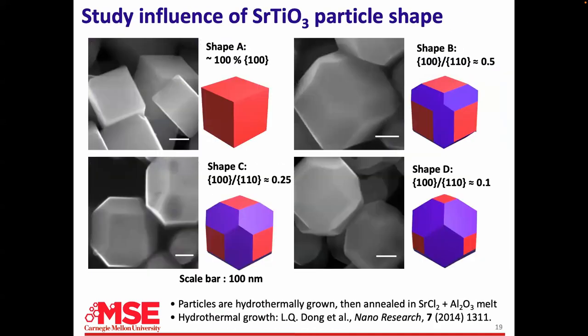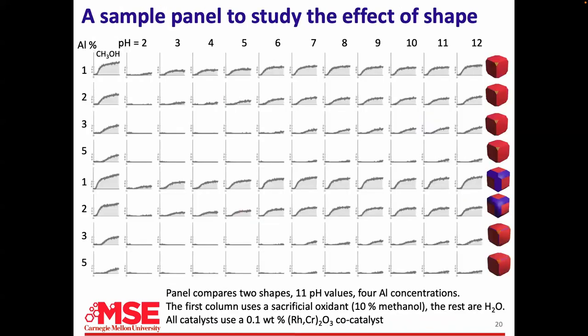What kind of experiments can we do? We can test particle shapes. We can hydrothermally make particles with different shapes — particles completely bound by 1,0,0 faces (little cubes), or we can bevel the edges to get the 1,1,0 faces — just by using surfactants during synthesis. Each curve in the data is one catalyst; in this case we changed the pH from 2 to 12. We also have a row where we put methanol in as a sacrificial oxidant — it's much easier to oxidize than water.